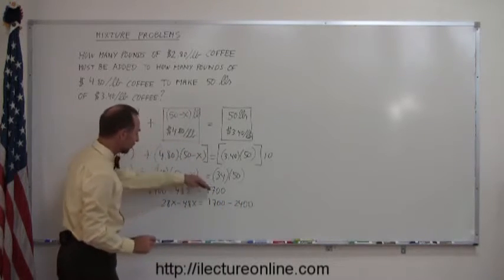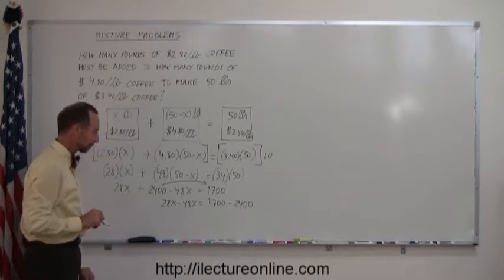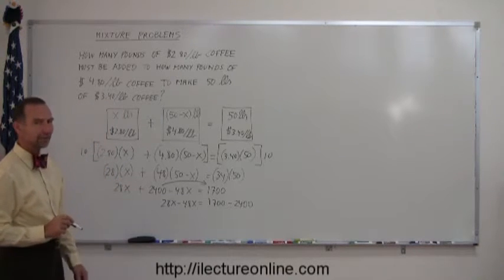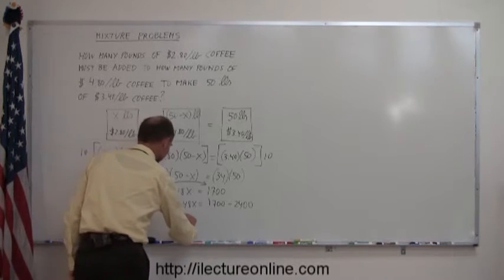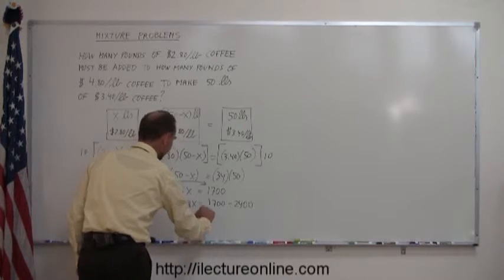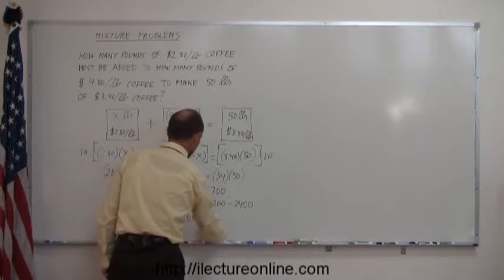Remember, whenever we cross the equal sign, the sign changes. 28X minus 48X is minus 20X. 1,700 minus 2,400 is minus 700.